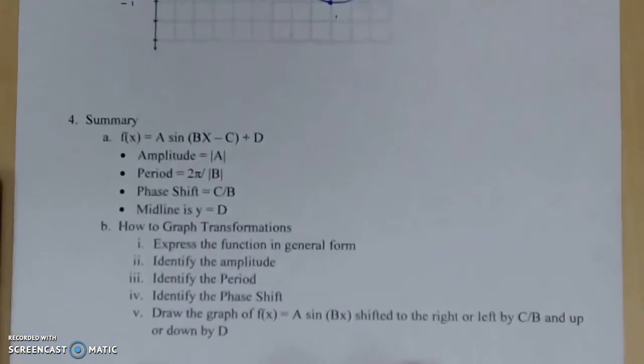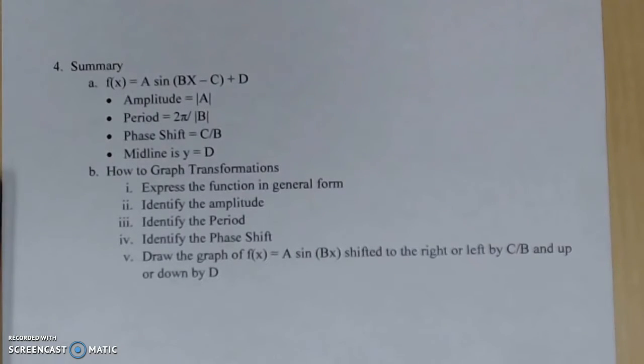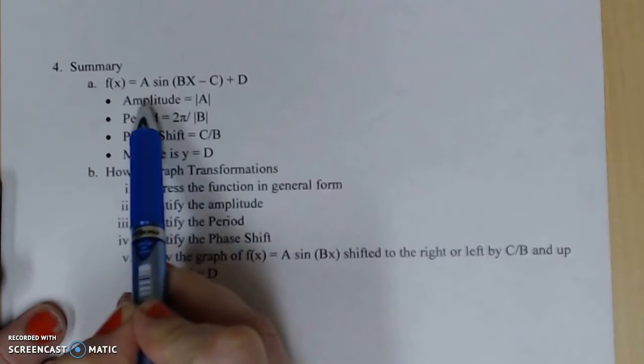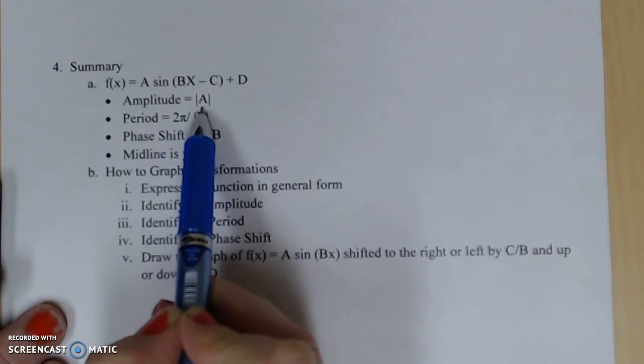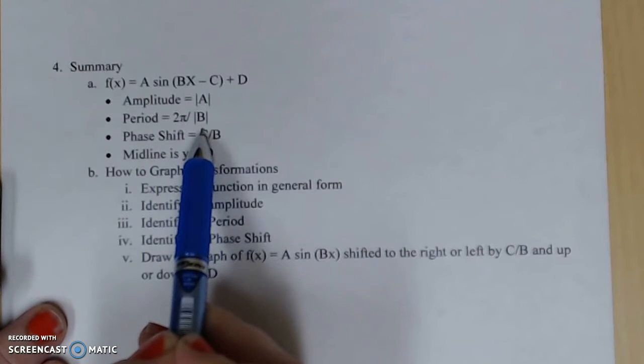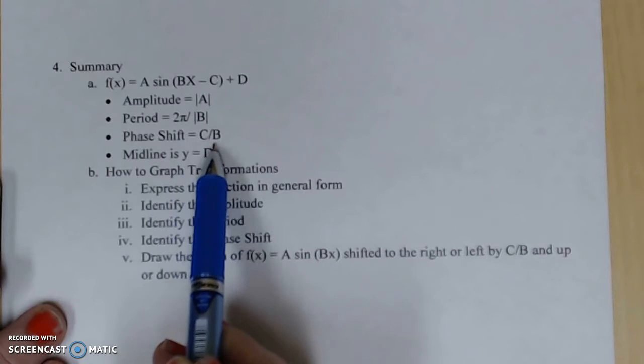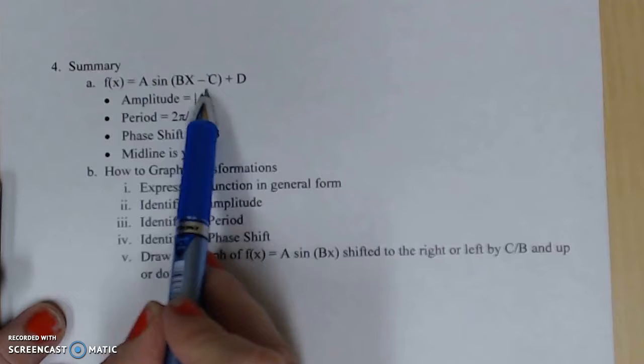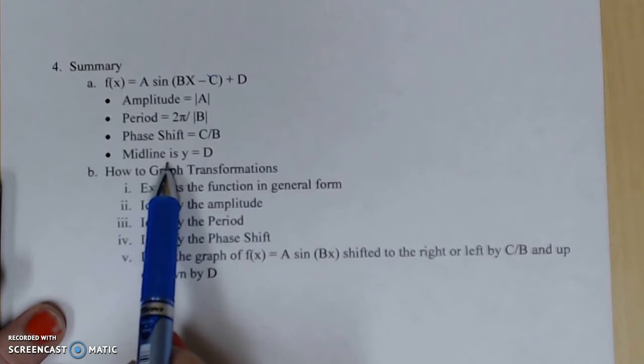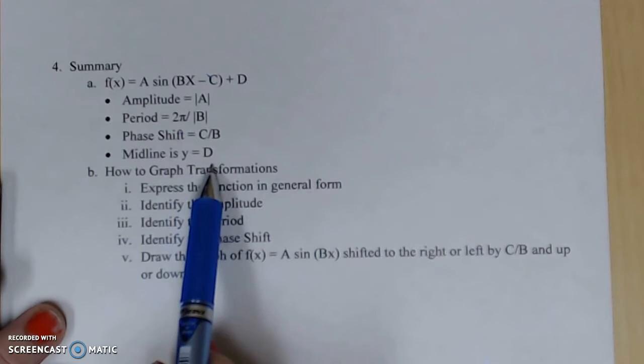And since we looked at our sine function as we went through each of them, I'm going to look at my sine function here. So in summary, if you're given this general form here, your amplitude is the absolute value of A. Your period becomes 2 pi divided by the absolute value of B. Your phase shifts are C over B, meaning it's going to be moving left or right with your C and up or down with your D. And your new midline is created at Y equal to D.